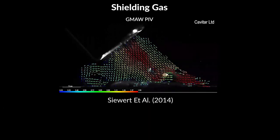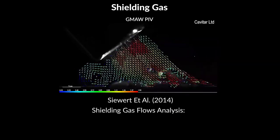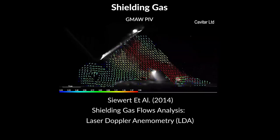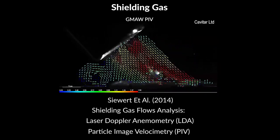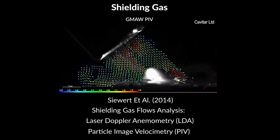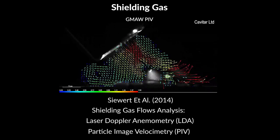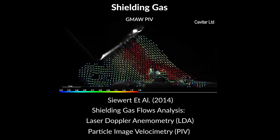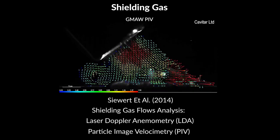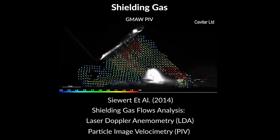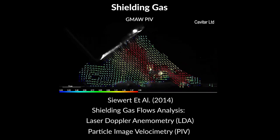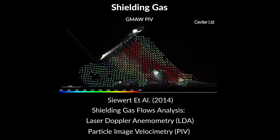Stewart et al. report that for analysis of shielding gas flows, both laser Doppler anemometry (LDA) and particle image velocimetry (PIV) have been tested. PIV was more effective of the two, as it made non-intrusive and temporally resolved direction of the two-dimensional gas flow field possible in GMAW and GTAW. The downside of both analysis methods, however, is that the costs are high and mastering the measuring technique requires dedication.